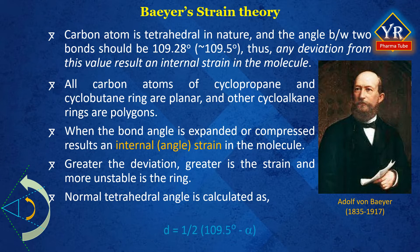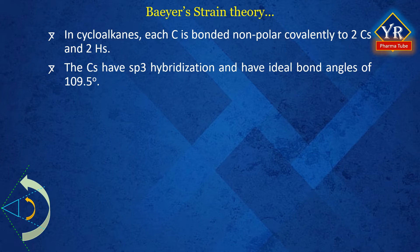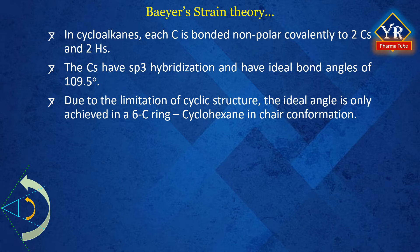Baeyer showed that the deviation d in cycloalkanes from the normal tetrahedral angle can be calculated as: d = 1/2 × (109.5° − α), where α is the bond angle in the various cycloalkanes. It is important to note that the distortion of a bond angle has been assumed to be equally shared between two bonds. In cycloalkanes, each carbon is bonded non-polar covalently to two carbons and two hydrogens. The carbons have sp3 hybridization and should have ideal bond angles of 109.5 degrees. Due to the limitations of cyclic structure, the ideal angle is only achieved in a 6-carbon ring, that is cyclohexane in chair conformation. For other cycloalkanes, the bond angles deviate from the ideal.